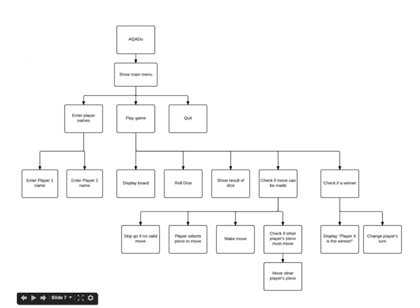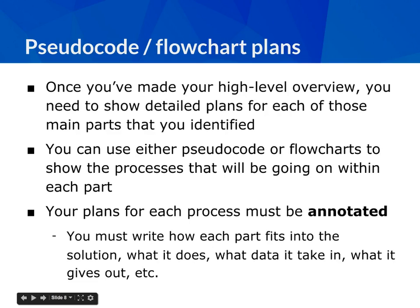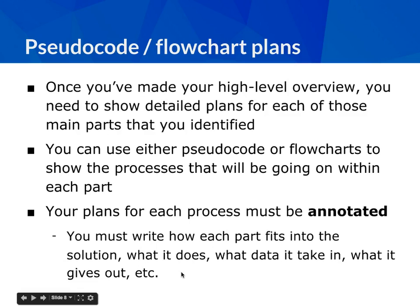Once you've done your high-level view, you then go into the detail of what's inside each of those processes — for example, what's inside 'die roll' and what's inside 'player one makes a move' — and that's where you do your detailed flowcharts or pseudocode. These must be annotated: explain what they are, what you're showing the reader, how each part fits into the overall solution, what its purpose is, which user need it fulfils, what data it takes in and gives out, and when or how it is called by another part of the program.